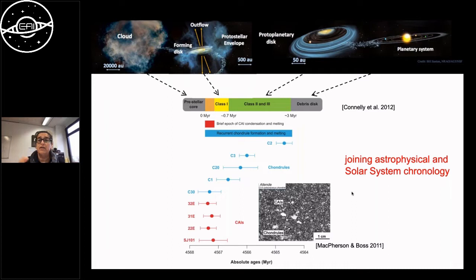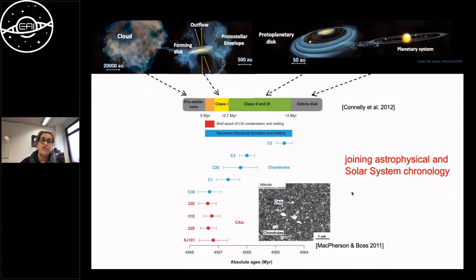To connect how astrophysically we observe planet formation with the picture from the solar system, we rely on the record in meteorites. When a meteorite is found and cut open, we see components like calcium-aluminium inclusions (CAIs) and chondrules. We can age-date these because they contain radioactive isotopes, and we see that CAIs are very old — they originate from a very early phase of the solar system.